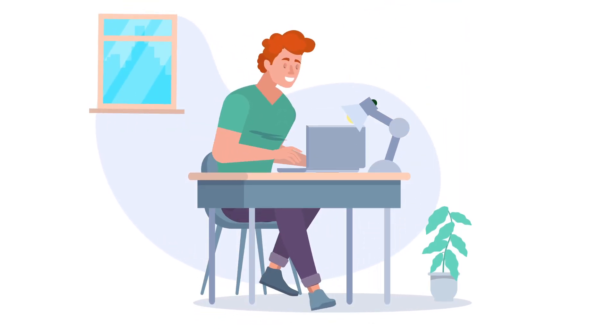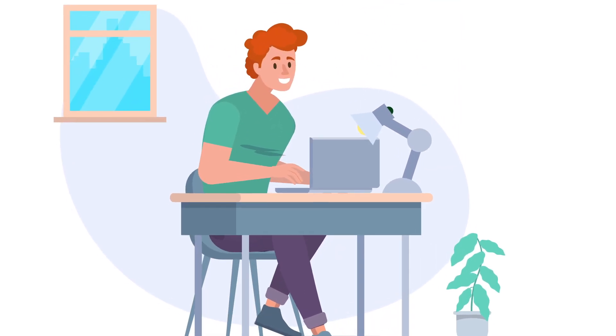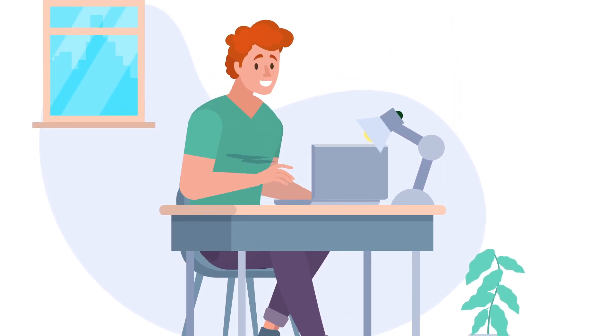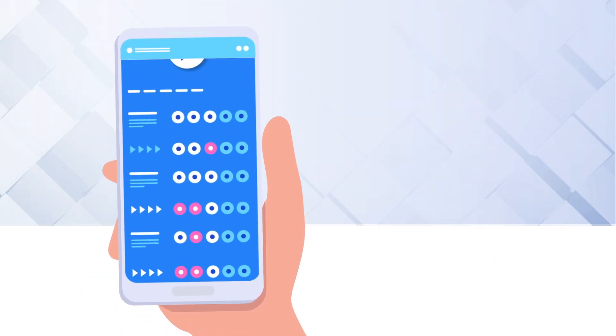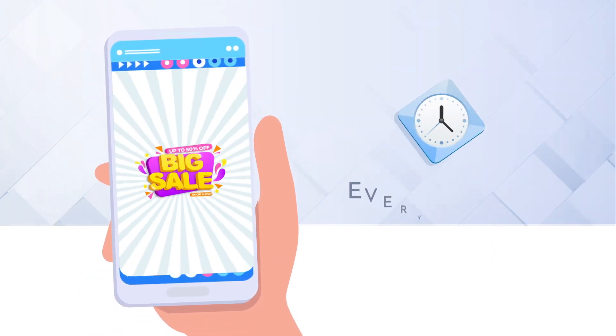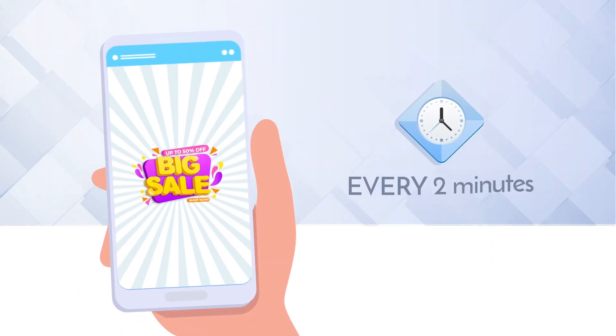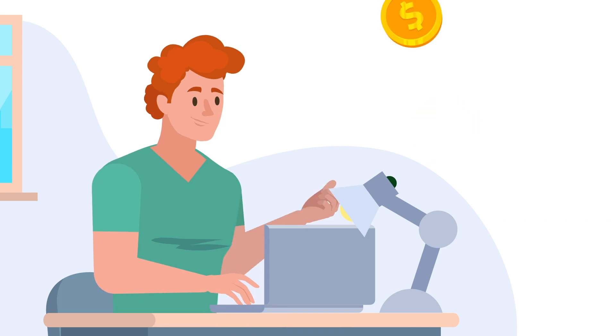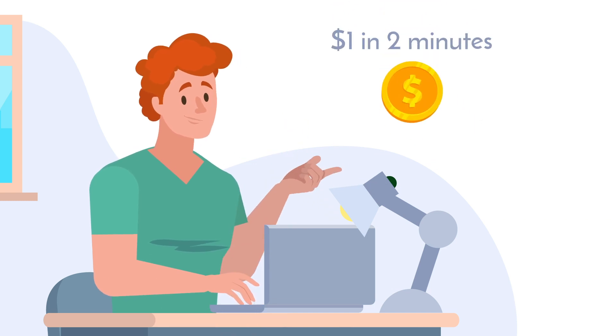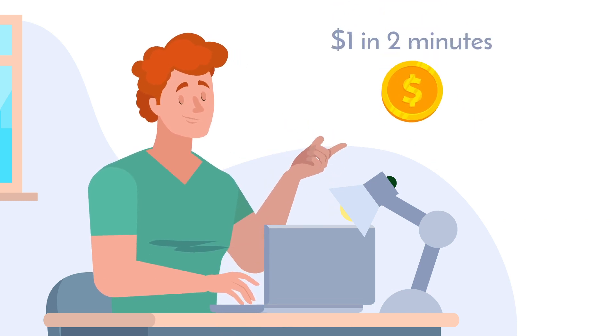This is RichiePro. He is a pro developer from Andromo. His app users watch interstitial ads every two minutes while enjoying Richie's app. RichiePro earns a dollar in two minutes.